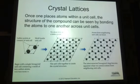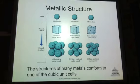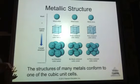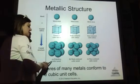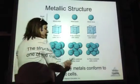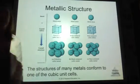Let's go on to metallic structures. The structures of many metals will conform usually to one of the cubic unit cells. If we're thinking about a metallic solid, for the most part we're going to find that there's either a primitive cubic metal, a body-centered cubic metal, or a face-centered cubic metal.